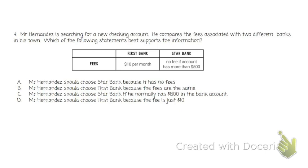Answer A says Mr. Hernandez should choose Star Bank because it has no fees — but that's not necessarily true. It has no fees only as long as there's more than $500, so that's not a true statement. Answer B says he should choose First Bank because the fees are the same — the same as what? That's not a clear statement. Answer C says he should choose Star Bank if he normally has $800 in his account — that sounds great, because if he has $800 then there's no fee at all, and he won't have to pay anything. Answer D says he should choose First Bank because it's just $10 — but if I only have $20 in the bank, do I want to pay $10 in fees? Not necessarily. So the answer is C.